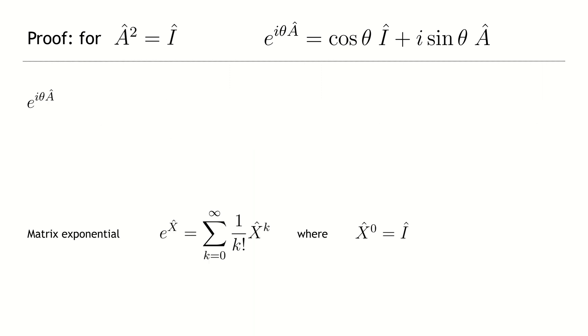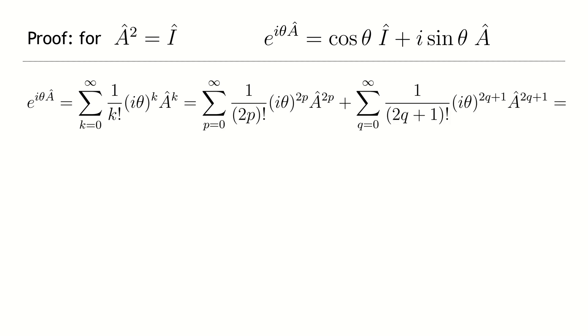We start the derivation from the definition of a square matrix exponential and apply it to e to the power of i theta A. Then, we divide the sum into summands with even and odd indices and denote them by the sum over p and the sum over q.